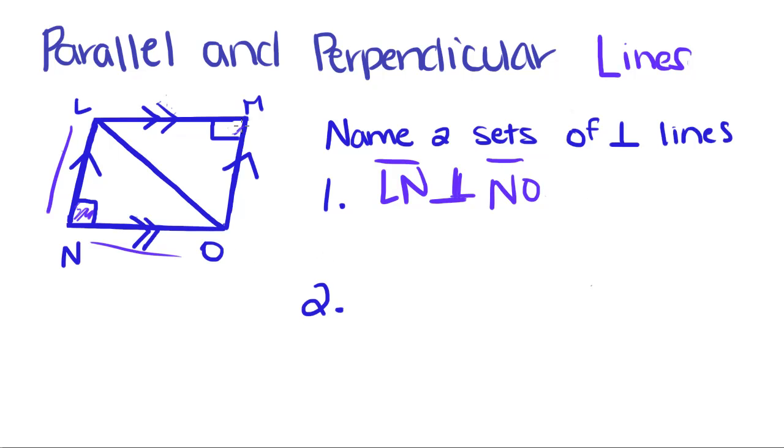And if you look at this other right angle right here, it's formed when LM and MO intersect. That means segment LM is parallel to line segment MO.